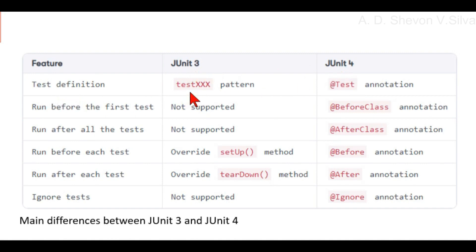For test definition, JUnit 3 uses the testXXX pattern, JUnit 4 uses the @Test annotation. For running before the first test, JUnit 3 does not support it, JUnit 4 uses the @BeforeClass annotation. For running before each test, JUnit 3 overrides the setUp() method, JUnit 4 uses the @Before annotation. For running after each test, JUnit 3 overrides the tearDown() method, JUnit 4 uses the @After annotation.